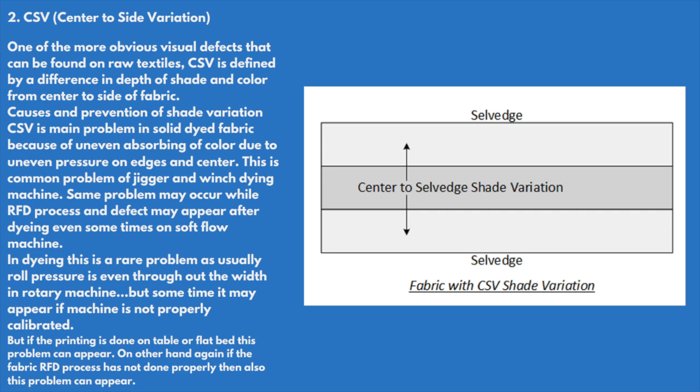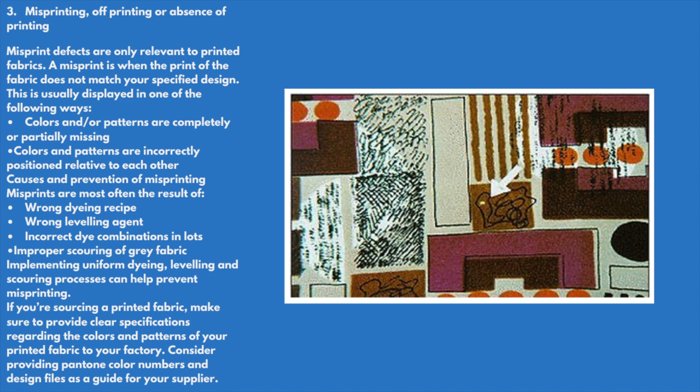CSV is a common problem with jigger and winch dyeing machines. The same problem may occur during the RFD process, and the defect may appear after dyeing even on soft flow machines. In rotary machines, roll pressure is usually even throughout the width, but this defect may appear if the machine is not properly calibrated. If printing is done on a table or flatbed, or if the RFD process has not been done properly, this problem can also appear.